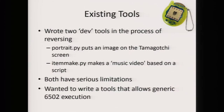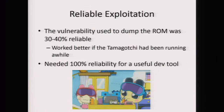The next thing I wanted to do was make dev tools. I already had two made in the process of reversing: portrait.py, which puts an image on the screen of the Tamagotchi, and itemmake, which I used to make the Tamagotchi music videos. But they both have serious limitations — they're for specific things. I wanted to write a generic tool to run generic assembly. The big problem was that my exploit wasn't very reliable — about 30 to 40% reliable, and very finicky. It tended to work well if the Tamagotchi had been running for a long time, but as soon as I started resetting it stopped working. For a useful dev tool you need 100% reliability, so I couldn't use this.